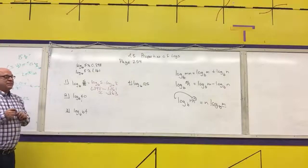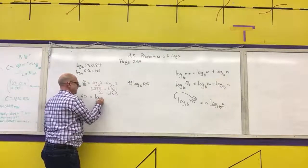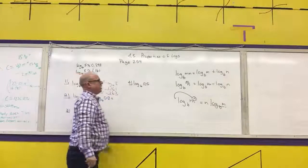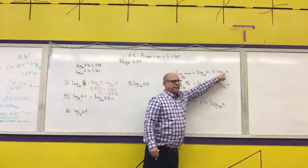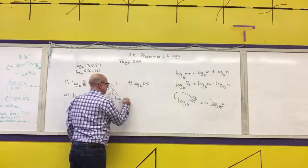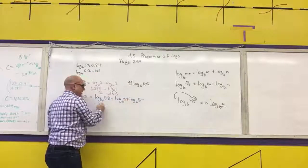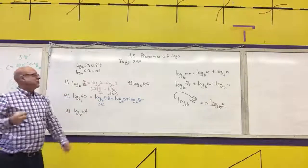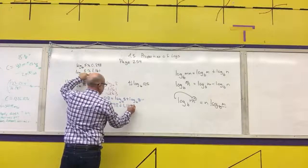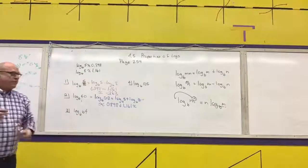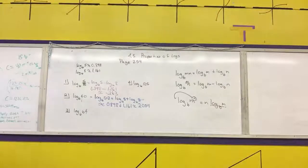Well, log base 6 of 5/8, it's a fraction. So it's log base 6 of 5 minus log base 6 of 8. That equals 0.898 minus 1.161. And that's approximately what, Jordan? Negative 0.263. Any questions on part 2?